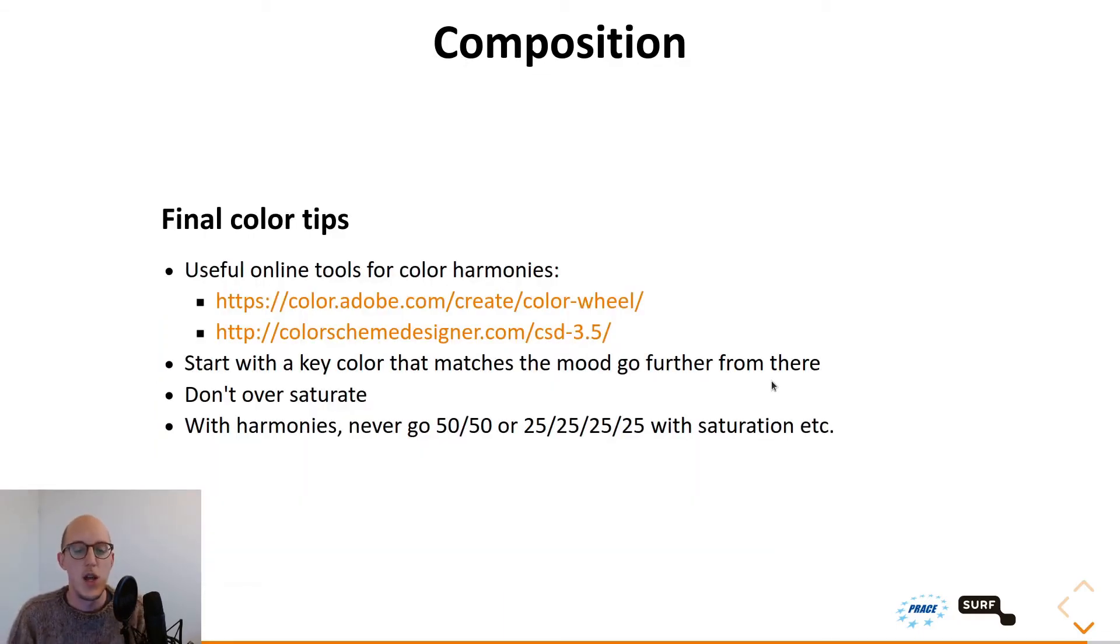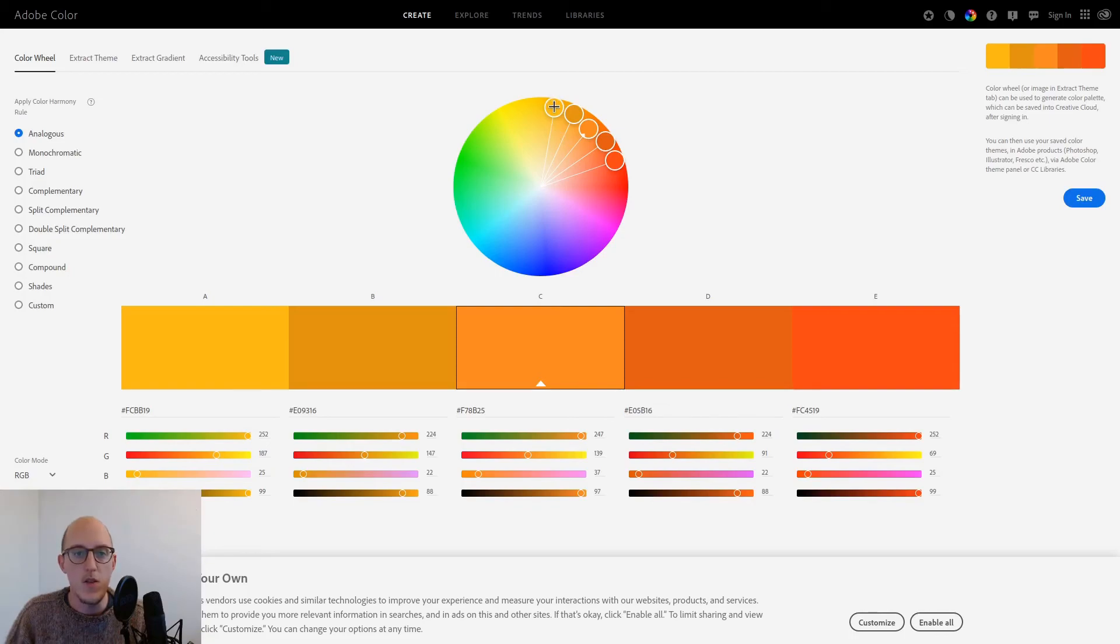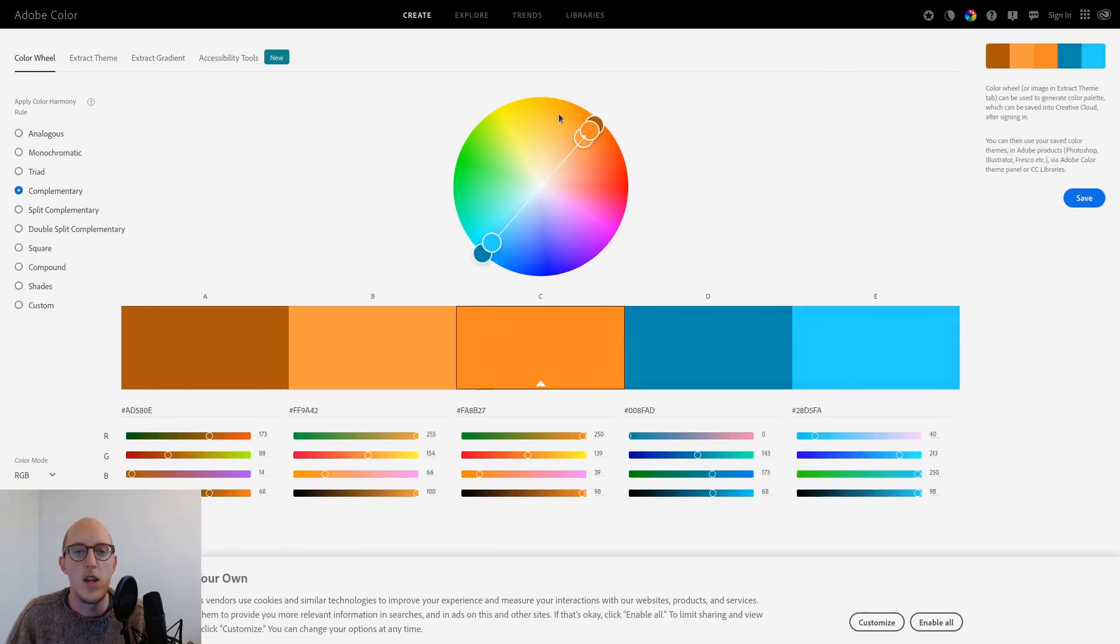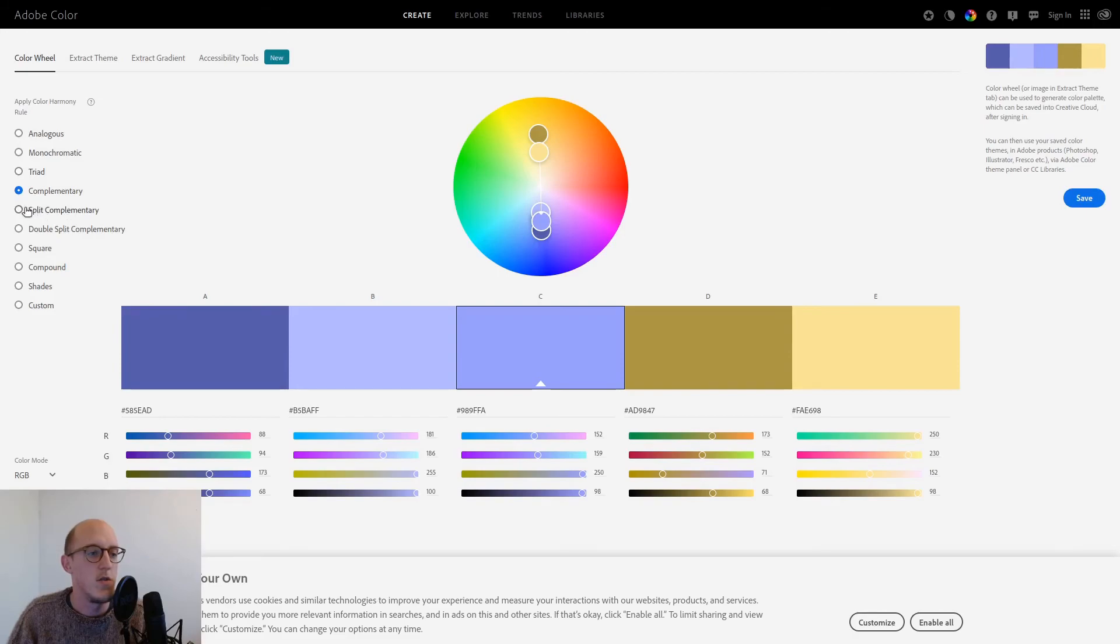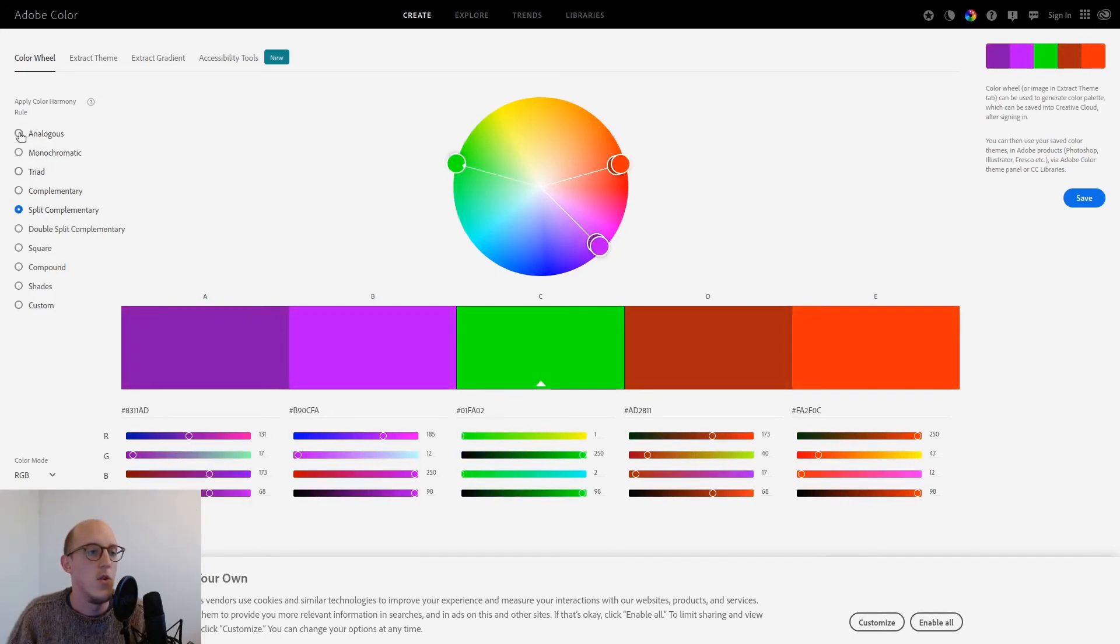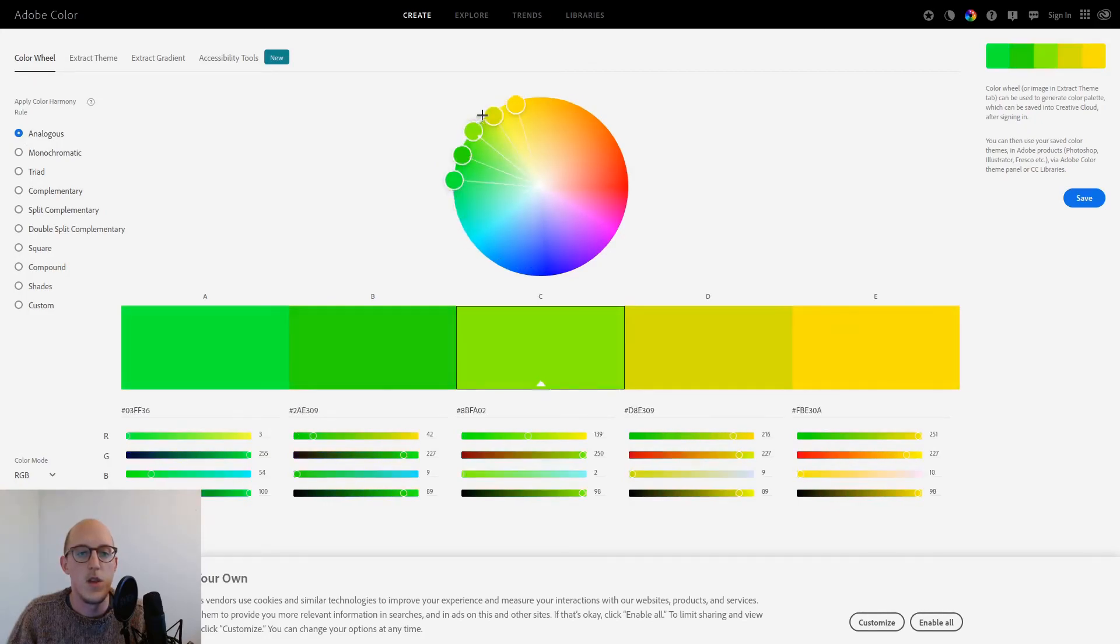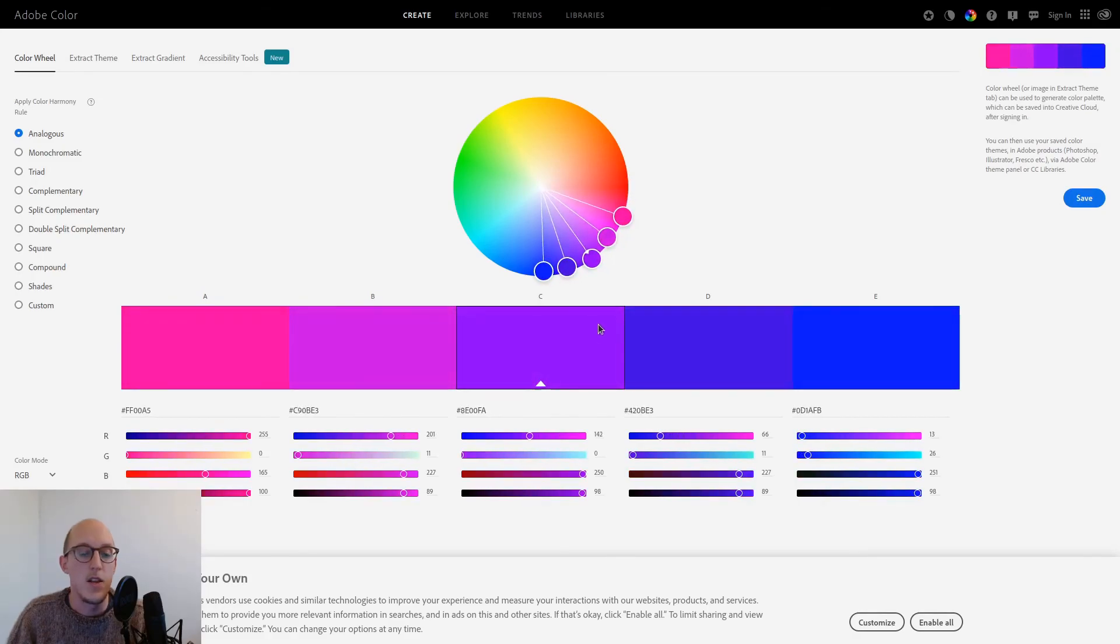And then finally we have some final color tips. There are, of course, some tools that help you with these color harmonies, or with the use of colors within your visualizations or in your renders. You have some very useful online tools for color harmonies. For example, this one from Adobe, the color wheel creator. Here you can just select which kind of color harmony you need, or which one you want. For example, the complementary. And then you can select a color, and you immediately see which other color is the opposite side of it, or for example, the split complementary, or the analogous one. And as you can see, it's pretty useful as a guidance tool for picking your colors.